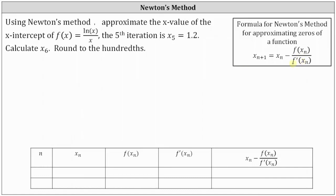In order to use Newton's method, we need to find f′(x). We are given f(x) equals natural log of x divided by x. To find f′(x), we apply the quotient rule, where the denominator of the derivative is the square of the denominator of the original function, giving us x squared. The numerator is x times the derivative of the numerator — the derivative of natural log x — which is one divided by x.